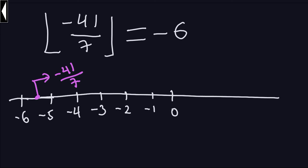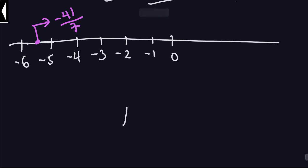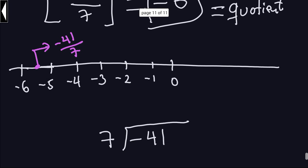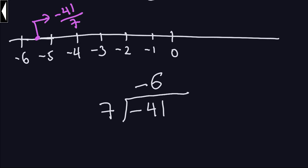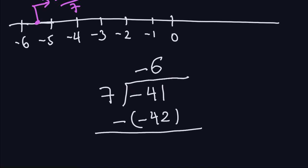So once I get the quotient, I can actually compute the remainder the same way as in primary school. I was trying to compute negative 41 divided by 7. The quotient was negative 6. So I take negative 6, multiply it by 7 — that gives me negative 42. Now I have to subtract negative 42 from negative 41. So I have negative 41 plus 42, because minus minus is plus. That gives me 1.